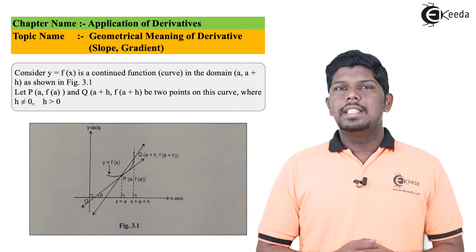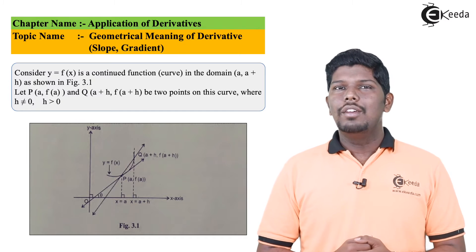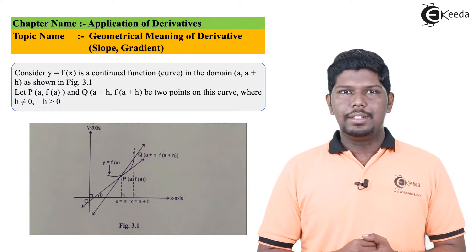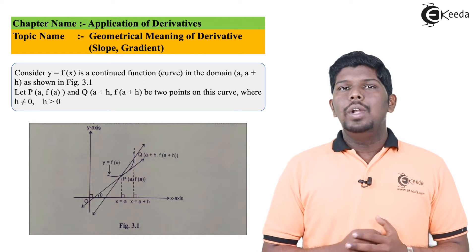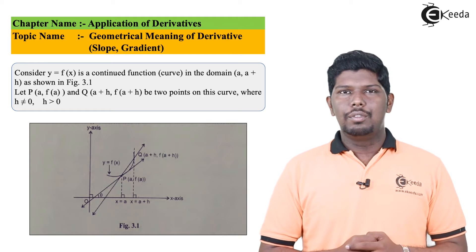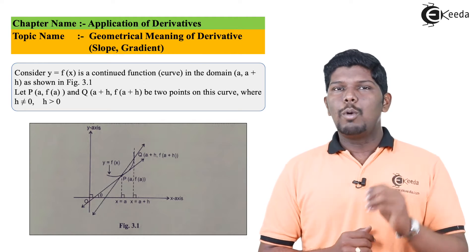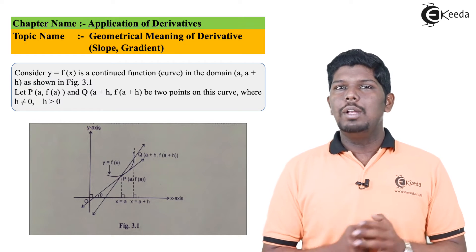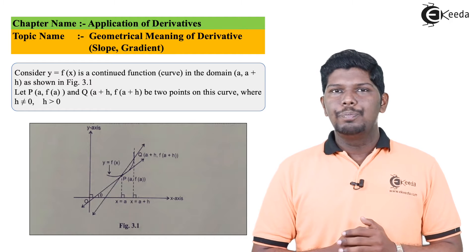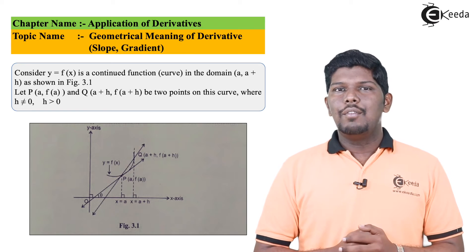Now to analyze this, we are going to consider a function, say y is equal to f of x, and its domain will be from a to a plus h. That is, the value of x will be a to a plus h. Now let us consider two points on this curve, that is point P and point Q. If you see, the coordinates of point P will be: value of x will be a, and value of y will be f of a.